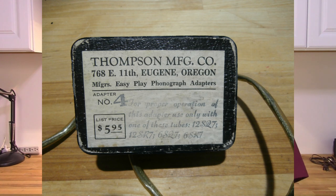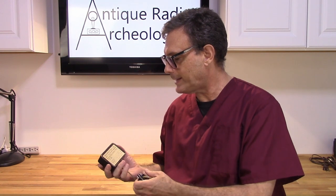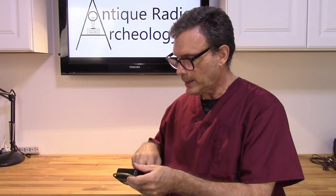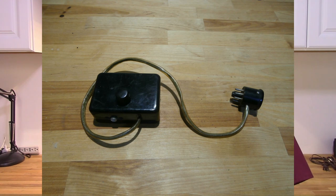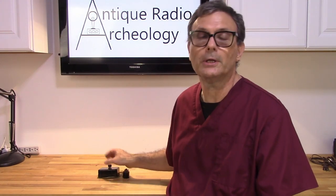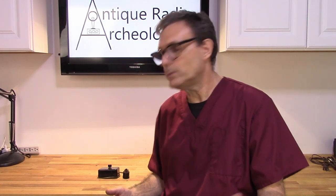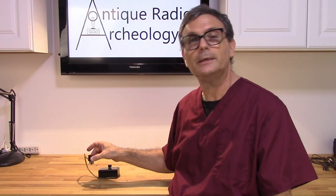I call it a Thompson box. It's made by Thompson Manufacturing out of Eugene, Oregon. This is adapter number four, and it's a phono adapter that you use on a radio to get the phono signal into the radio if you don't have a phono jack. It has a little phono input, you plug your phonograph into it, turn it on, and you can adjust the volume and use that with your radio. The way it does it is you place the detector tube into the top of the socket, plug the socket into the radio, so you're not really modifying the radio in any way.